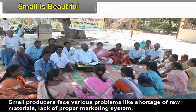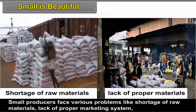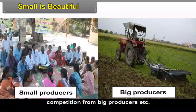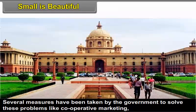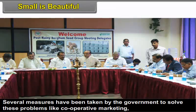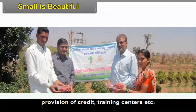Small producers face various problems like shortage of raw materials, lack of proper marketing system, competition from big producers, etc. The success of small producers depends upon the ability to solve their problems. Several measures have been taken by the government to solve these problems like cooperative marketing, provision of credit, and training centers, etc.